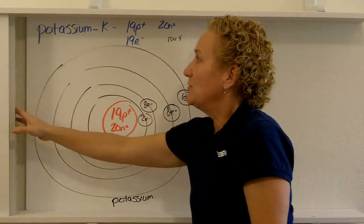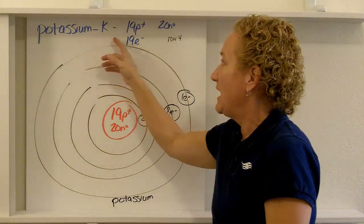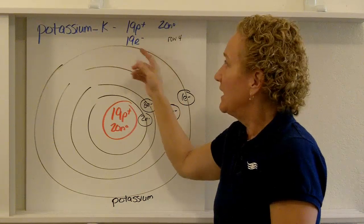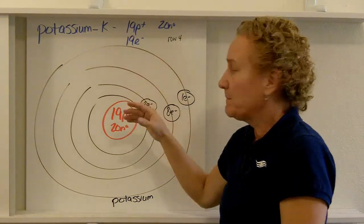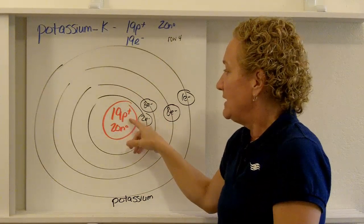But this is the one I wanted to show you because of that third energy level not taking 18. It's potassium, K, which is 19 protons, 20 neutrons, and 19 electrons. It's in row four, which tells me I need four energy levels.